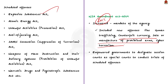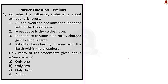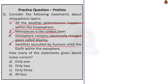Now let us move on to the preliminary practice question discussion. Four statements are given and you have to find how many are correct. Statement one: all weather phenomena happen within the troposphere — correct. Statement two: mesopause is the coldest layer — correct. Statement three: ionosphere contains electrically charged gases called plasma — correct. Statement four: satellites launched by humans orbit the Earth within the exosphere — correct. So the correct answer is option D, all four.